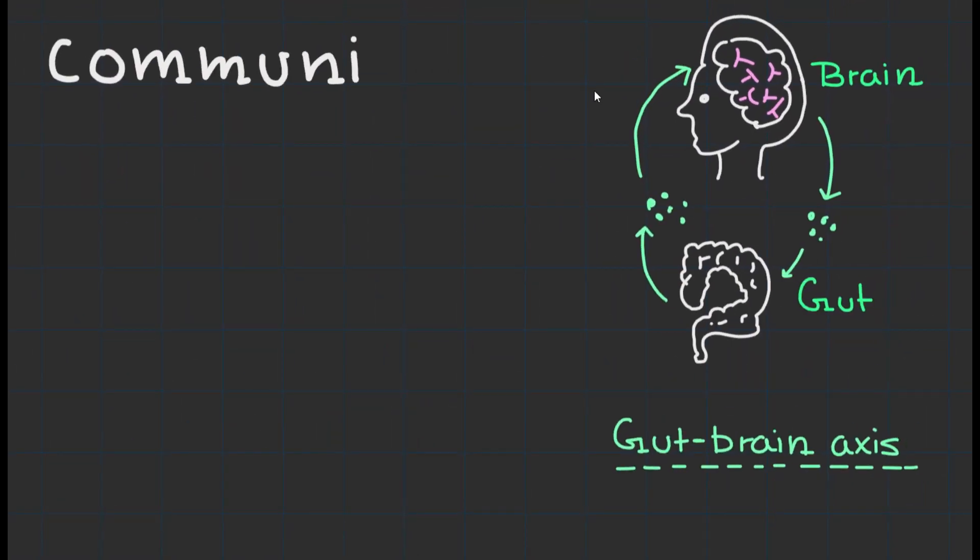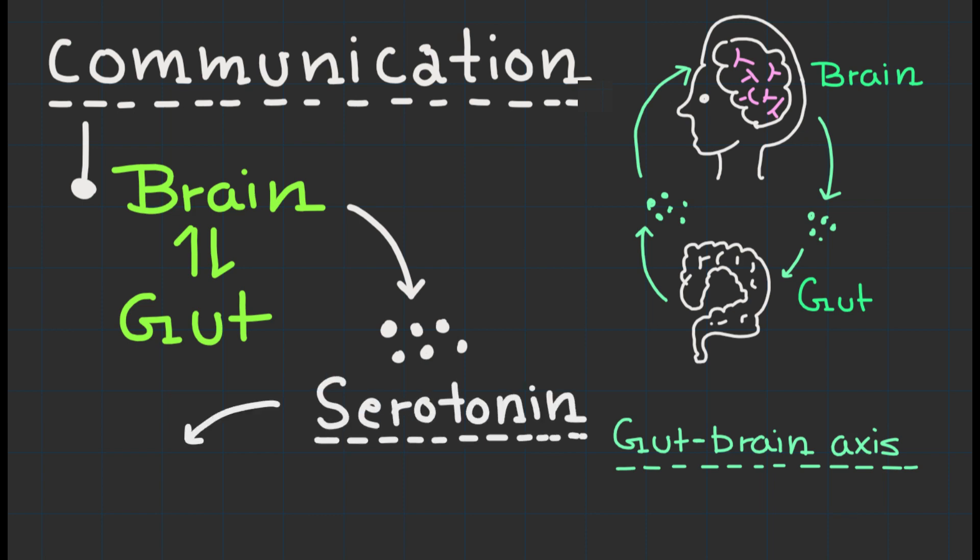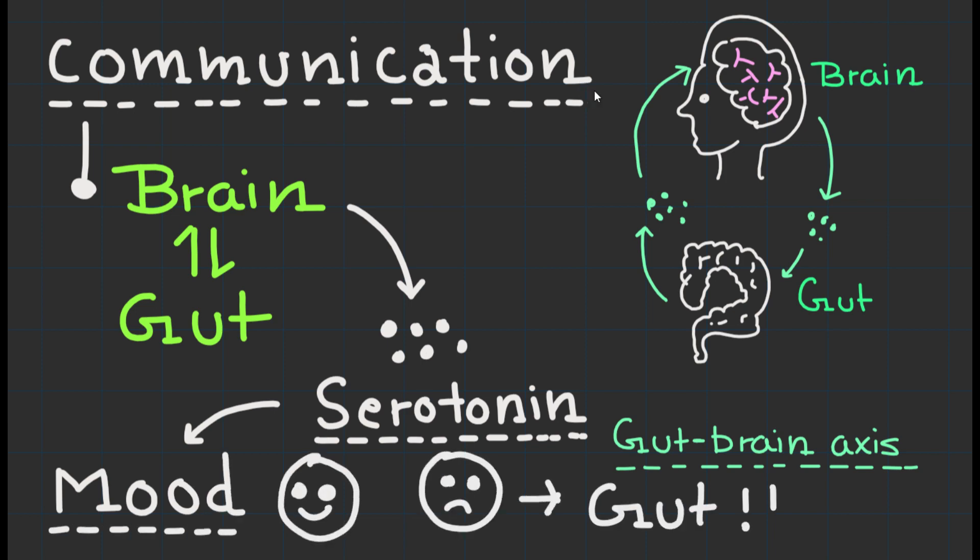But their influence doesn't stop there. Did you know that the gut microbiota communicates with our brain? Yes, that's right. Through the gut-brain axis, these microorganisms produce neurotransmitters such as serotonin, which can affect our mood, behavior, and even mental health.